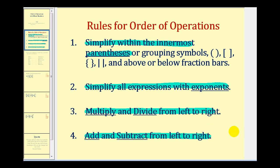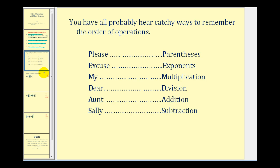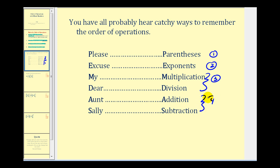There are four steps to the order of operations, so be careful if you're used to using PEMDAS — 'please excuse my dear Aunt Sally' — to remember the order of operations. There are only four steps: parentheses, exponents, multiply and divide from left to right, and then add and subtract from left to right.